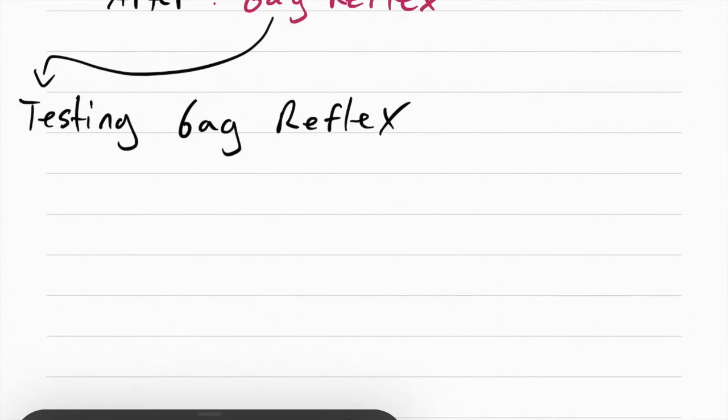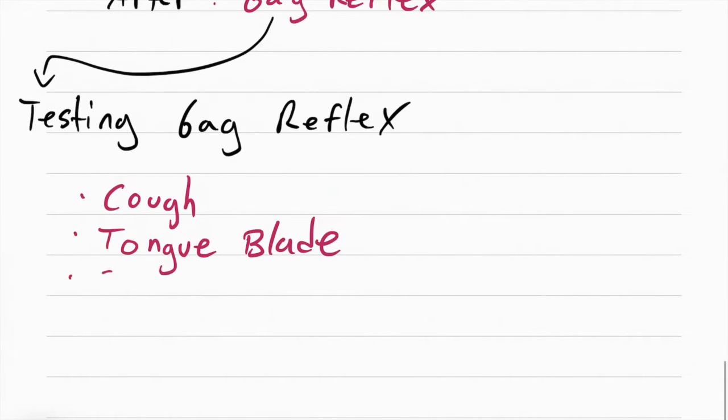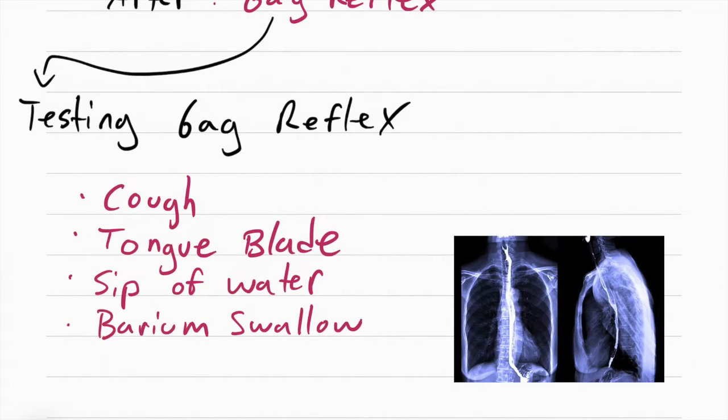How you check for gag reflex is you can ask the patient to cough a few times, you can use a tongue blade, you can ask the patient to take a small sip of water and see if they can swallow it, or you can get a barium swallow study done. This is a test where the patient drinks barium and an x-ray gets done while they're swallowing. This is to see what's going on in their upper GI while they're swallowing.